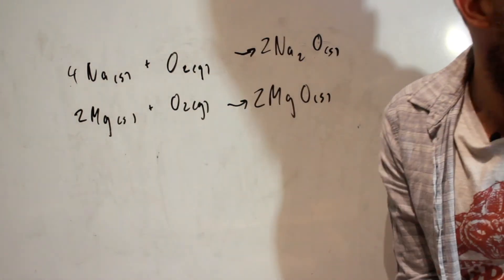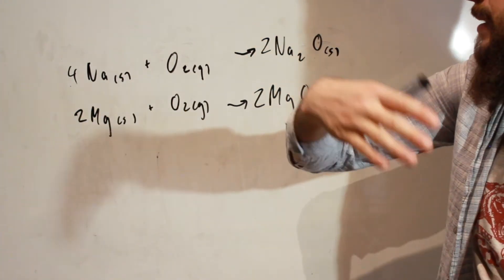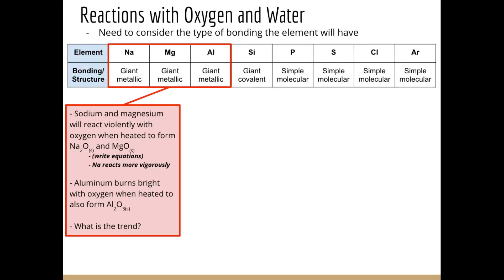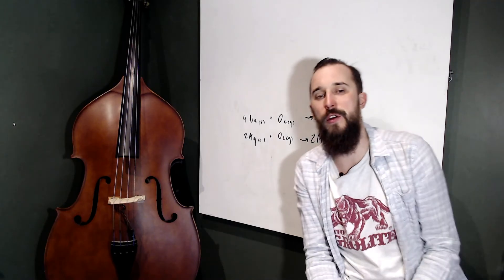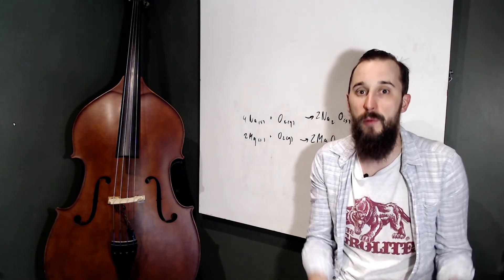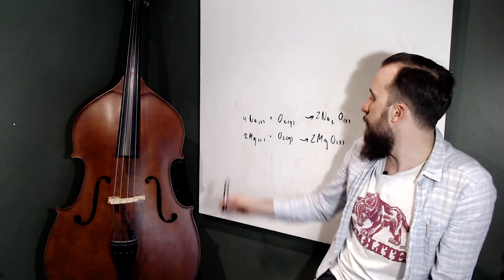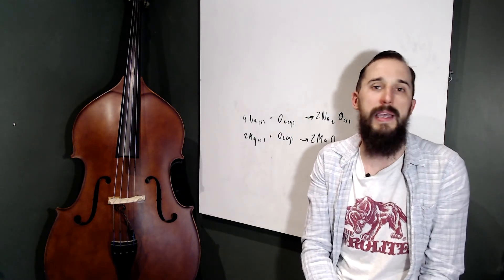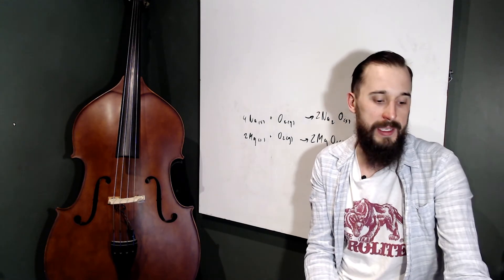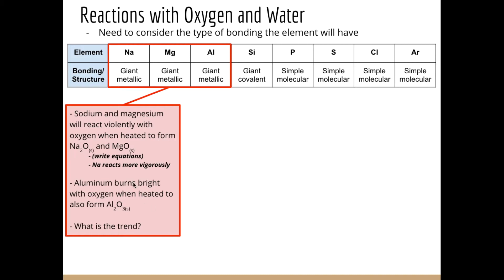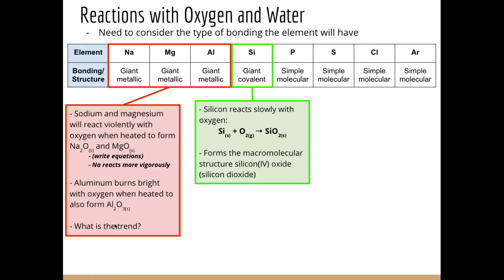Sodium reacts more vigorously than magnesium, which makes sense — sodium has only one valence electron and is very reactive, desperately wanting to get rid of it. Magnesium with two valence electrons similarly wants to lose them, but is more stable compared to sodium. So we see that periodicity between these. Aluminium similarly reacts with oxygen, burning brightly when heated to form aluminium oxide. Going across the period, the metals do react with oxygen when heated and become less vigorous as we go.